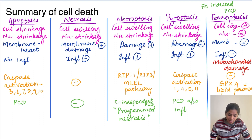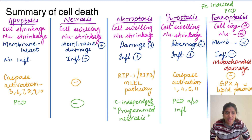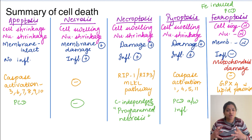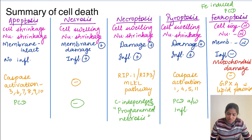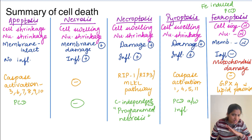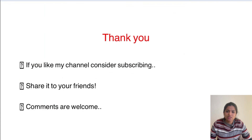Programmed cell death refers to forms of cell death regulated by multiple signaling pathways and regulated genes. The programmed cell deaths we know of are apoptosis, necroptosis, pyroptosis, and ferroptosis — all except necrosis. In the next class we will cover autophagy. If you like this content, please consider subscribing. Thank you.